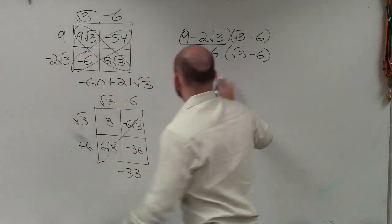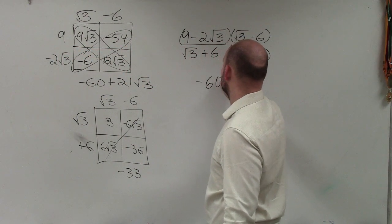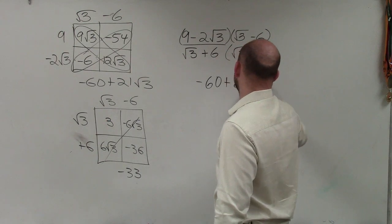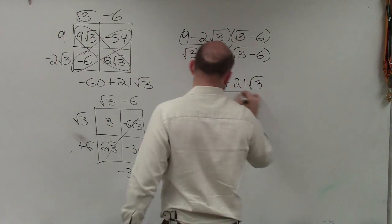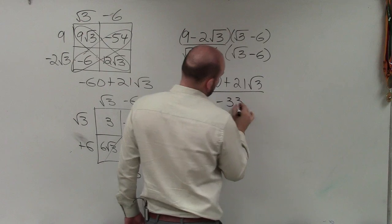Now, I'm going to replace my numerator here. So I have negative 60 plus 21 square root of 3 divided by negative 33.